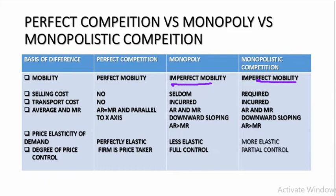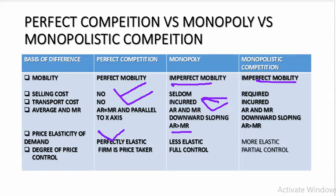Regarding the average revenue and marginal revenue: under perfect competition, AR and MR are both parallel to the x-axis and equal to each other. Under monopoly, MR lies below AR because to sell more units the monopolist has to reduce the price — so AR and MR are downward sloping and AR is greater than MR. Similarly under monopolistic competition, AR and MR are downward sloping. Under perfect competition it is perfectly elastic because it is parallel to x-axis. Under monopoly it is less elastic; under monopolistic competition it is more elastic.